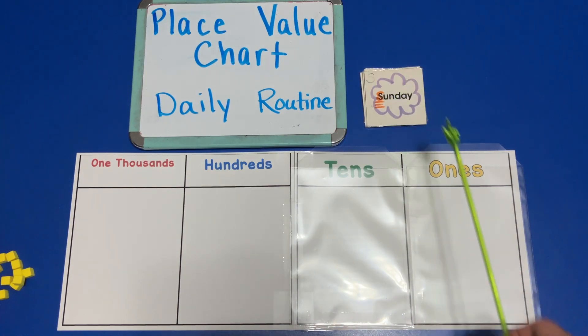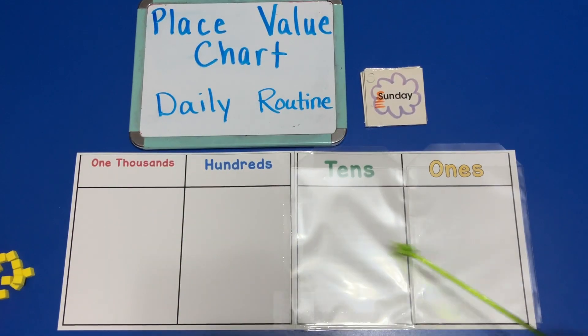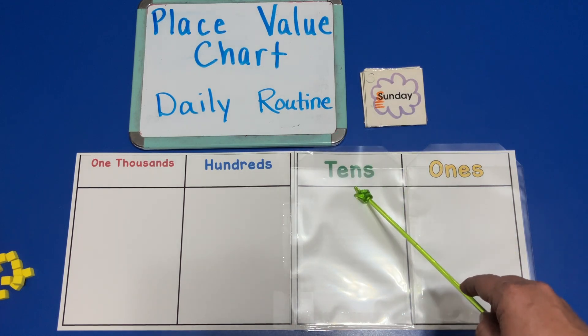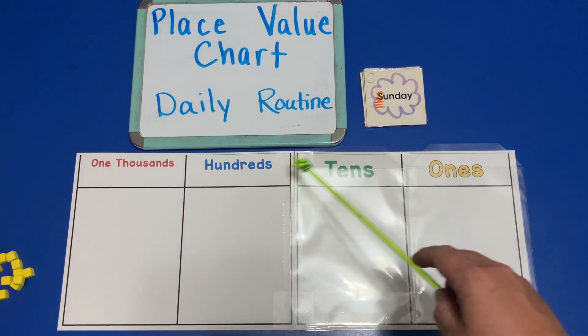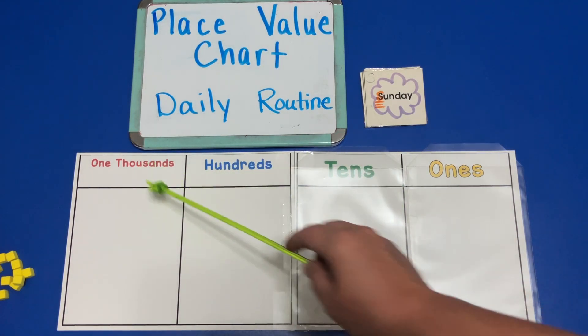This card says Sunday. This is the place value chart. Here are the ones, the tens, the hundreds, and the thousands.